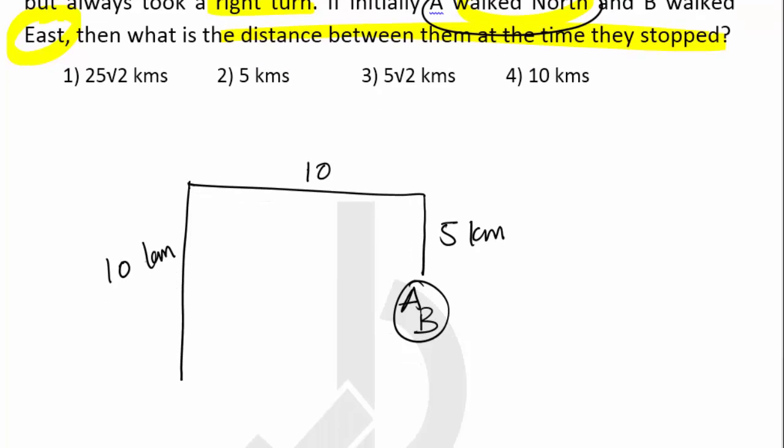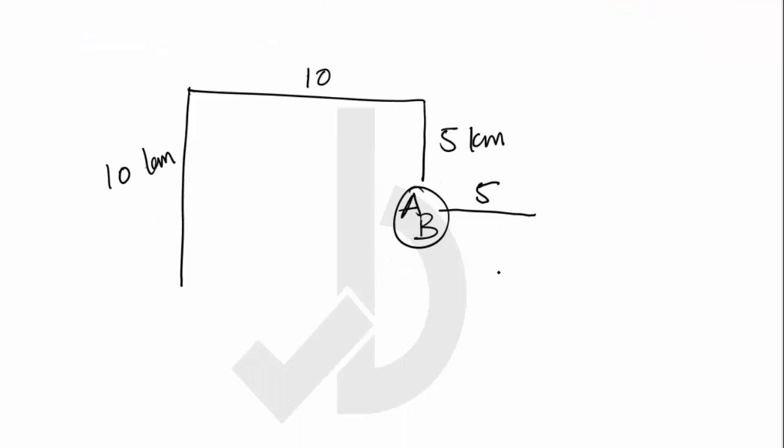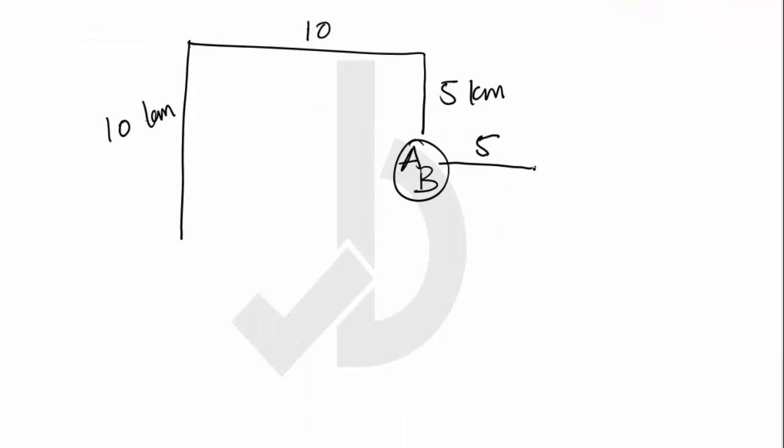B walked the same distances and went towards east 5 kilometers, then took a right turn traveling 10 kilometers, and finally turned left going 10 kilometers. So this is the final distance between them.